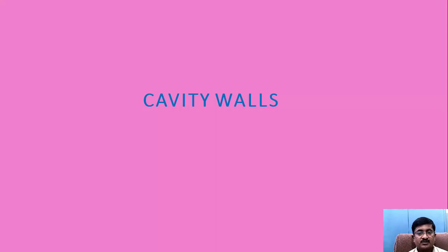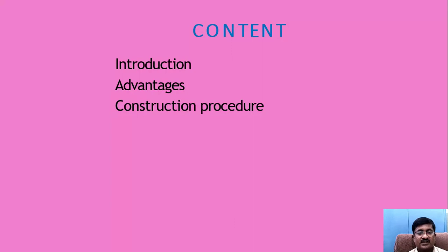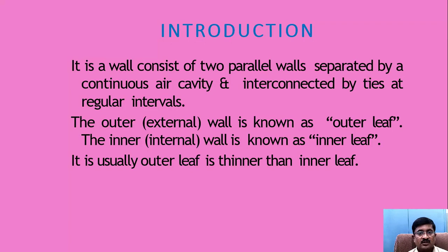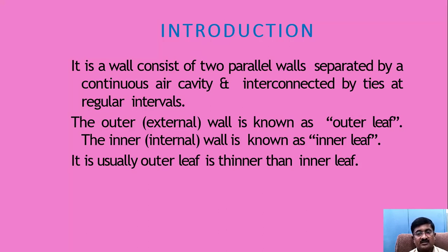Now we will see regarding especially the cavity walls — how they are constructed. We will see what a cavity wall is, what the advantages are, and what the construction procedure is. A cavity wall is a wall which consists of two parallel walls separated by a continuous air cavity and interconnected by ties at regular intervals. The outer wall is known as the outer leaf and the internal wall is known as the inner leaf. Usually the outer leaf is thinner than the inner leaf.